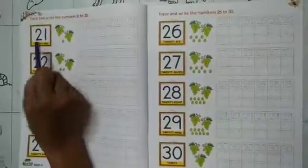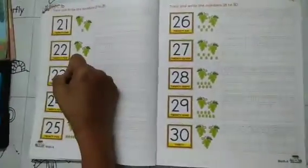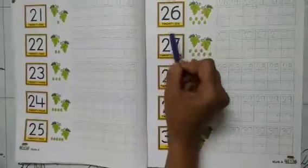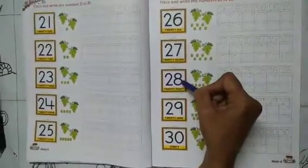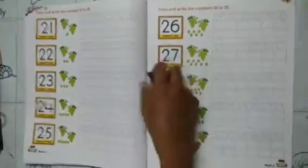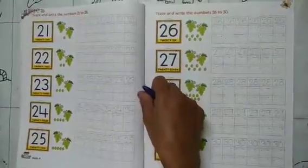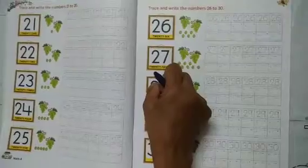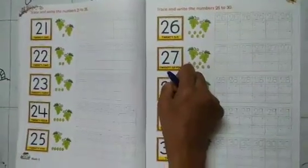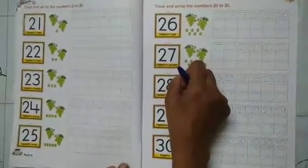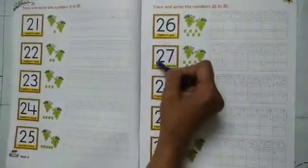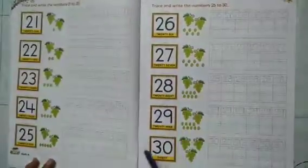21, 23, 24, 25, 26, 26, 27, 27, 28, 29, 30, 30. 22, 26, 27, 28, 30, 30.